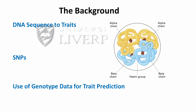Therefore, if the amount of a trait that is determined by the genetic code is known, the trait can be predicted. This includes diseases. Variants have been identified that are linked with disease, and individuals carrying these variants are more likely to express a particular disease. This knowledge could lead to tailored medical care and prevention in the future.